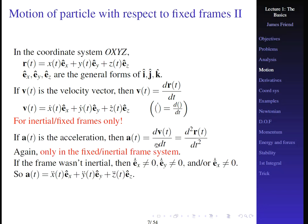For the acceleration, we take another derivative and get the second time derivative of the position vector. Again, this only works in the fixed or inertial frame. If the frame were not inertial, then Ê_X_dot, Ê_Y_dot, and Ê_Z_dot would not be zero. So the acceleration is written as ẌÊ_X + ŸÊ_Y + Z̈Ê_Z.